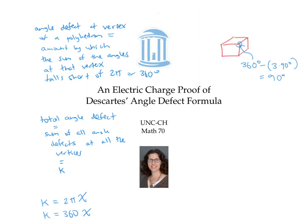This electric charge proof works for any polyhedral surface without boundary. But there is a very similar proof that works for polyhedral surfaces with boundary, as long as we think of the angle defect at a boundary vertex as 180 degrees minus the sum of the angles at that vertex, instead of 360 minus the sum. Your homework problem walks you through the proof for surfaces with boundary.